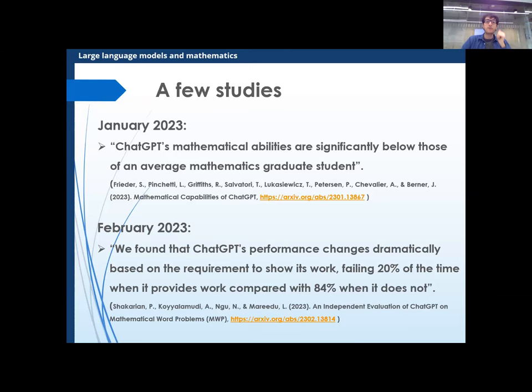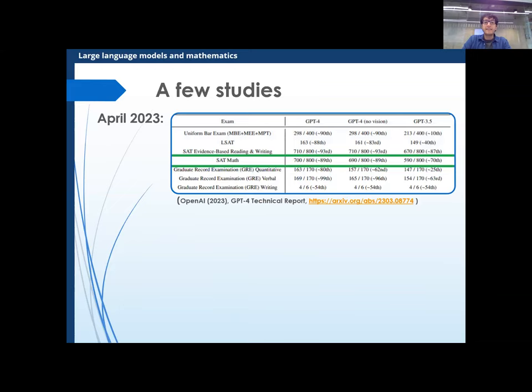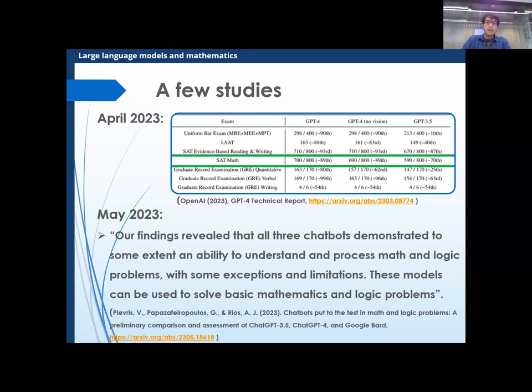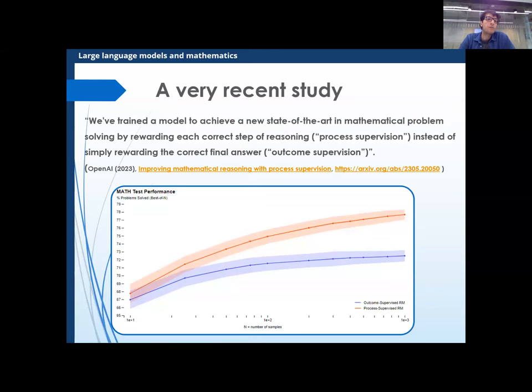In April 2023, GPT-4 came out and its performance on the SAT maths improved a lot compared to GPT-3 — pretty impressive. In May 2023, a test between GPT-3.5, GPT-4, and Google BARD showed that all these models can be used to solve basic maths and logic problems. And finally, a very recent study from OpenAI found that when you train the model to reward not just the outcome but the process — like when a student makes a silly calculation mistake but is doing the right thing — the maths performance improves.